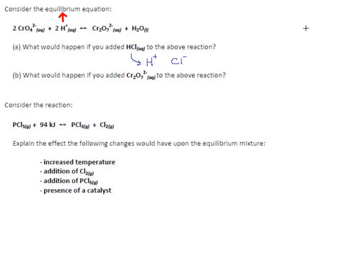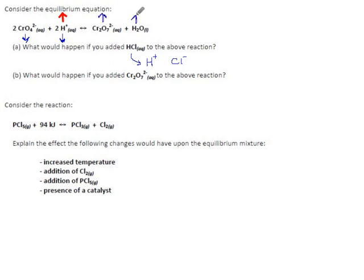When you put excess hydrogen in, the system immediately fights back and says it's going to try to get rid of that hydrogen. The system can use up hydrogen, and if it's using hydrogen, it will also use chromate at the same time. An entire side will always go in the same direction all at once. So all the reactants will go down, and if you're using up reactants, you must be making products.